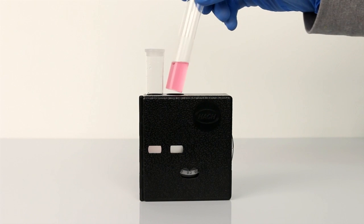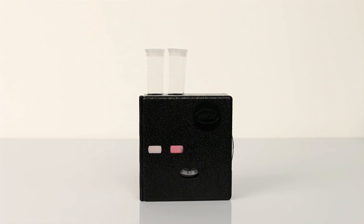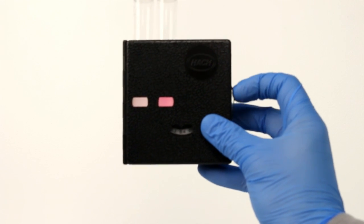Place the tube in the top right opening of the color comparator. Hold the comparator up to a light source while looking through the opening in the front.